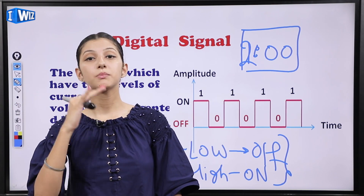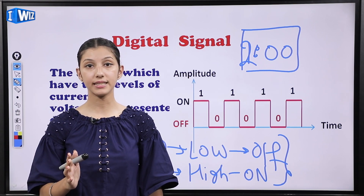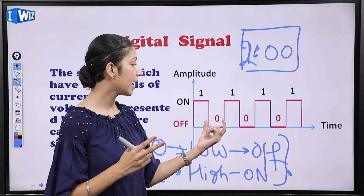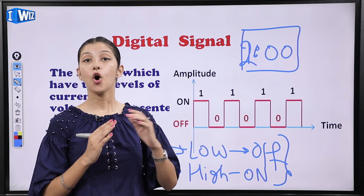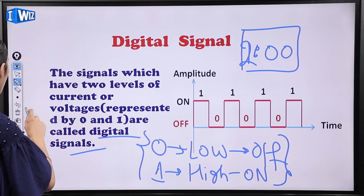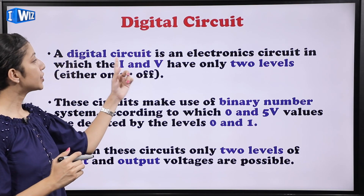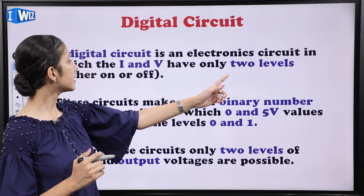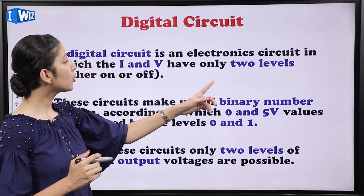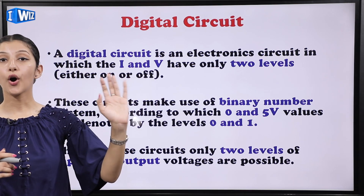Analog signals ki case mein bohot saari values possible hoti hain — woh continuously time ke saath vary karta hai. But digital signals ki case mein humare paas do values hoti hain — low and high — aur koi bhi value possible nahi hoti. Moving forward: a digital circuit is an electronic circuit in which the current and voltage have only two levels — either on or off.